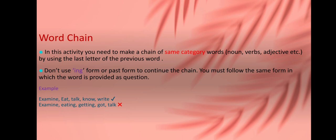For example, eat - last word T, next word talk - last word alphabet K, next word know - last word last alphabet W, so next word is write. This is correct word chain. But if I'll write eating, getting, got, talk, this will be wrong.